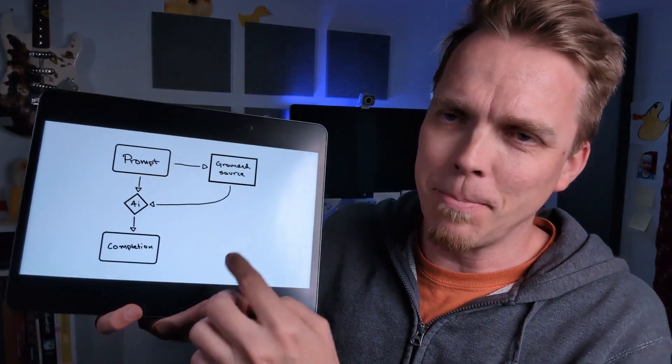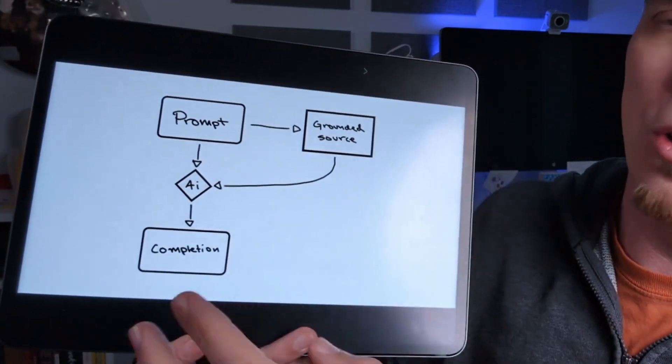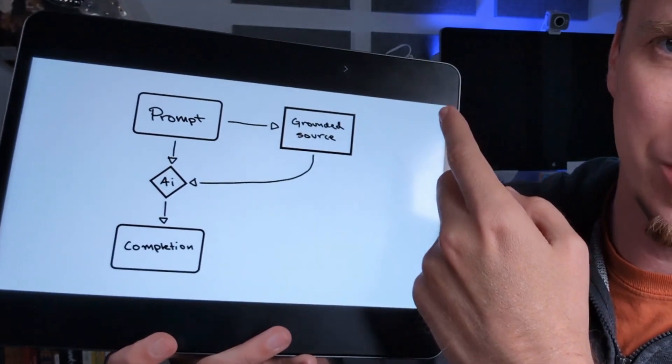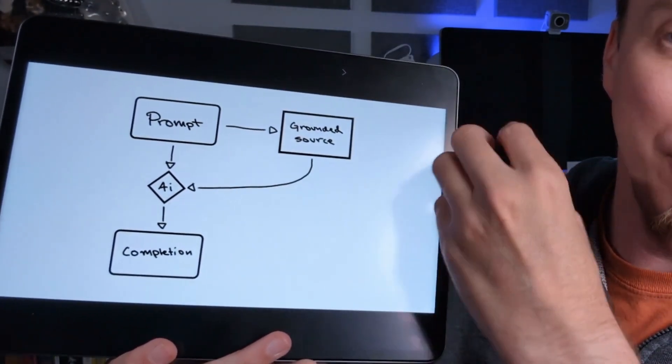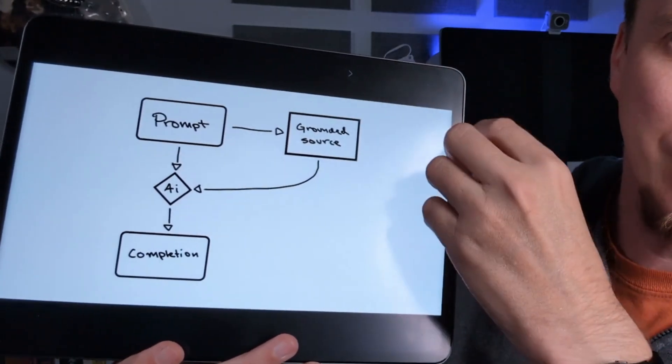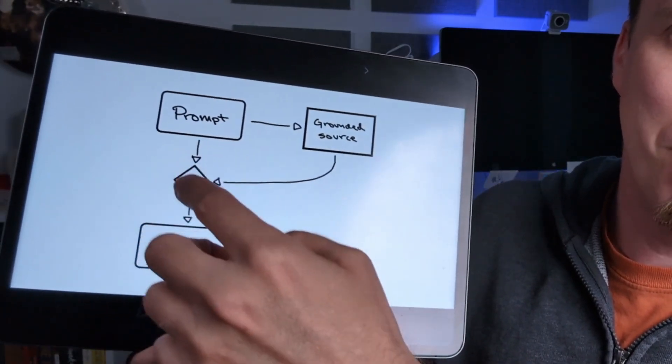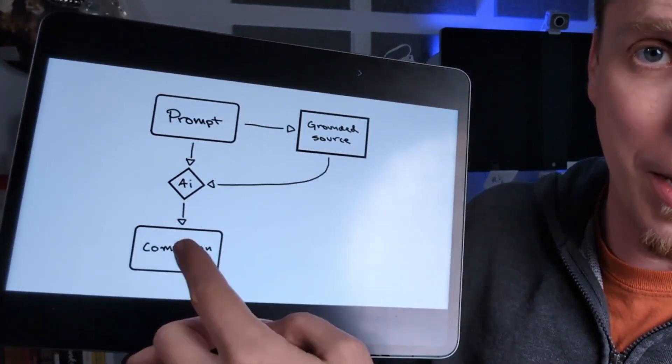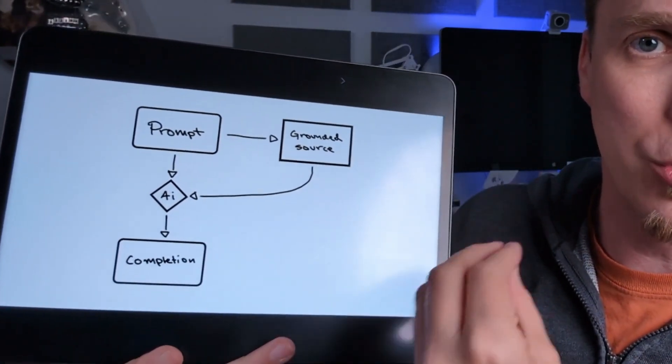The way we solve this is by adding a grounded source. So when you ask the AI system a question, the AI system sends off the question to a database with information, and then matching information gets sent back into the AI system. It combines that with your request, and you get a more grounded response that's actually grounded in truth.